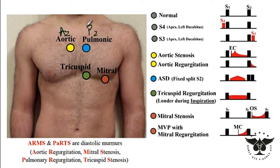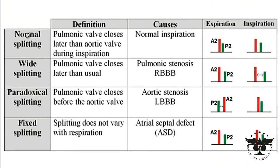During expiration, the A2 and P2 are so close to each other that you cannot distinguish them. However, during inspiration, since more blood goes to the right side of the heart, it takes longer for the P2 valve to close. The timing gap between A2 and P2 increases, and that is when you hear the splitting sound — this is referred to as normal splitting. So the pulmonary valve closes later than the aortic valve during inspiration, producing the normal splitting you can hear.